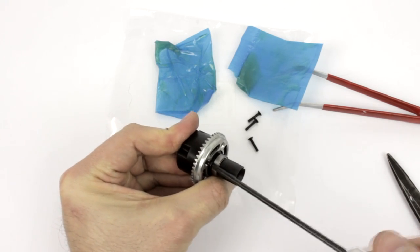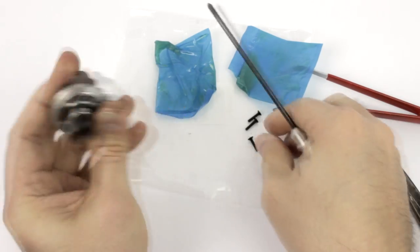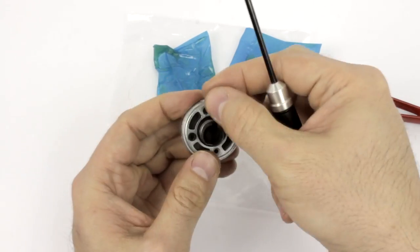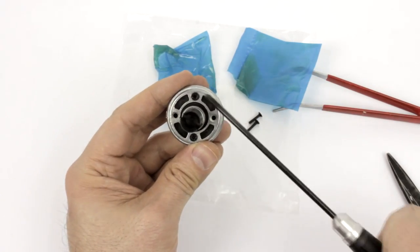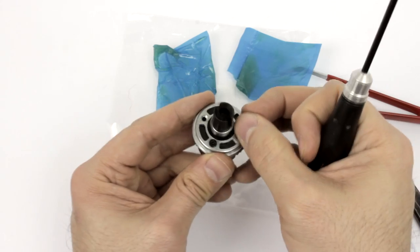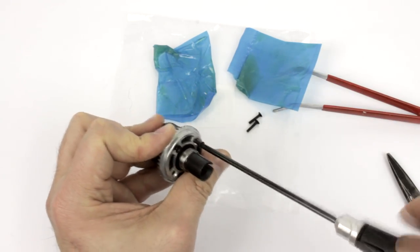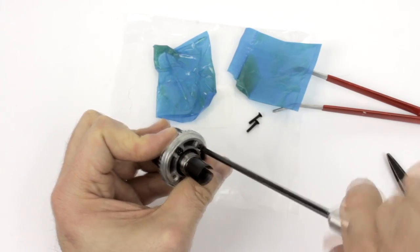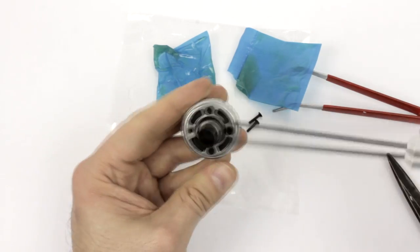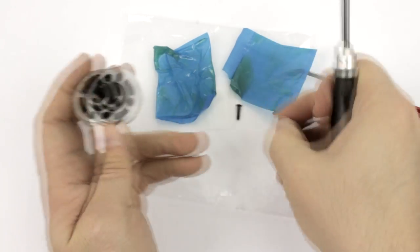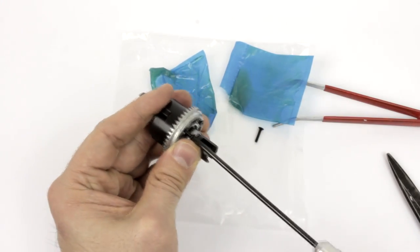And what this does is it just makes sure that everything, the forces of these screws, is distributed evenly across the face of this metal gear. So we're doing this one, this one, and then this one. So I believe I used the compass points the first time we did this. So we're doing north, south, east, west. And we have an extra screw. Don't worry about that. That's just an extra screw just in case you lose one of these.